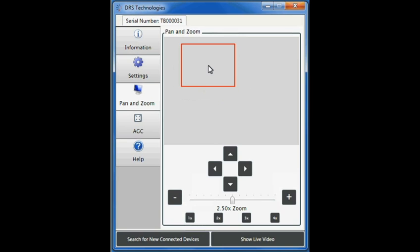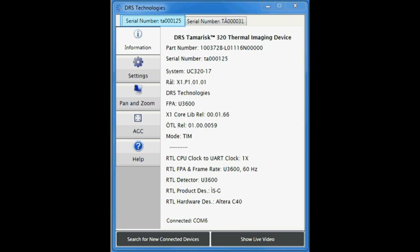If you connect more than one camera to your setup, you may need to click the Search for New Connected Devices button. You'll see the Serial Number tab for the newly installed camera appear. To control each camera, you must first click its Serial Number tab.